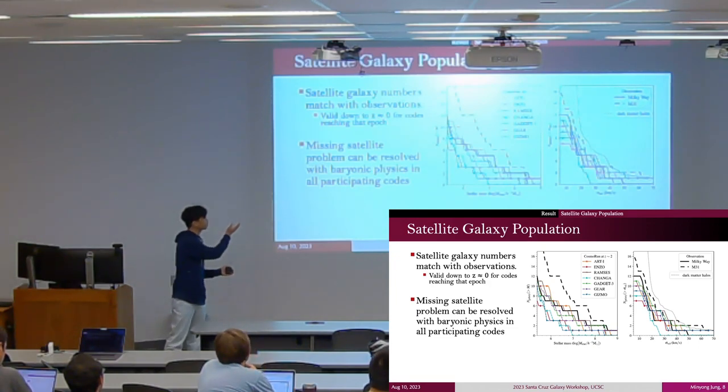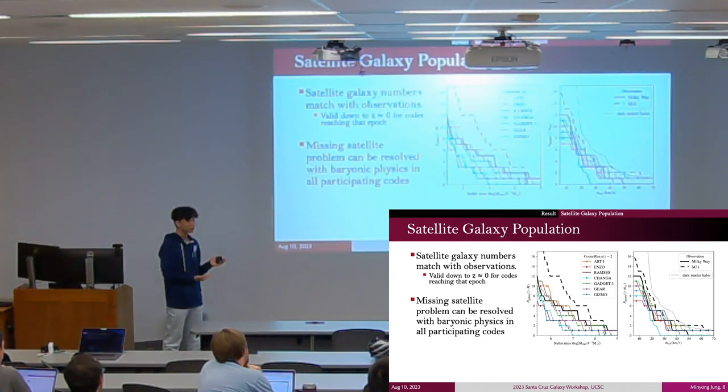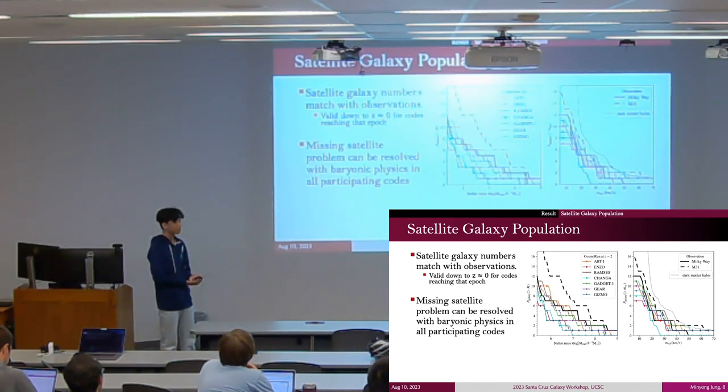The right panel's dotted line shows the number of dark matter halos in hydro runs. So the reason that you're resolving this is because there are some dark matter halos that do not have stellar mass, is that the idea?